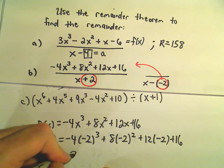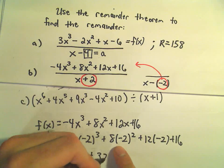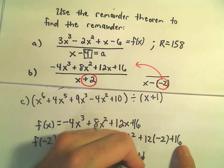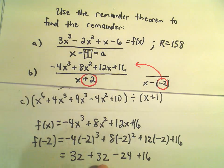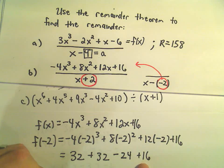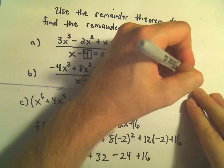Negative 2 cubed is -8 times -4 is 32. Negative 2 squared is 4 times 8 is another 32. 12 and -2 is -24 plus 16. 32 and 32 is 64 minus 24 is 40 and another 16. I'm getting positive 56 as the remainder in this case.